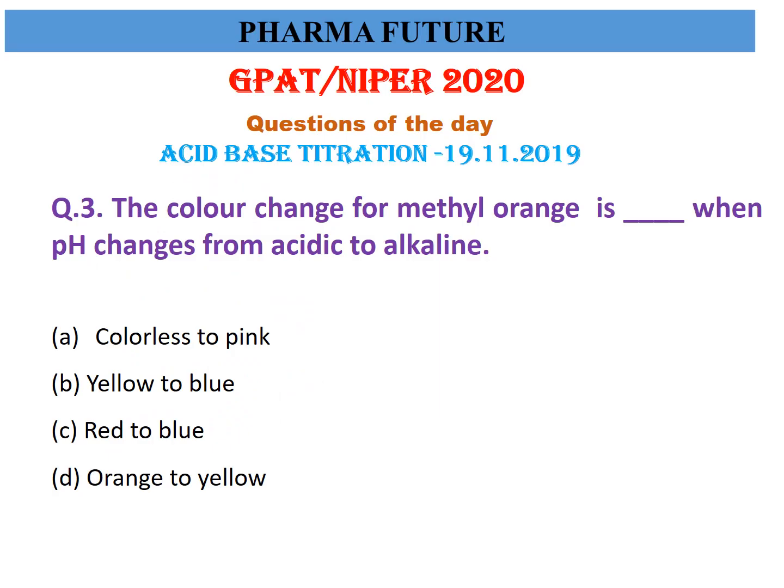Third question: what is the color change of methyl orange when pH changes from acidic to alkaline? Options are: colorless to pink, yellow to blue, red to blue, or orange to yellow. The right answer is orange to yellow.